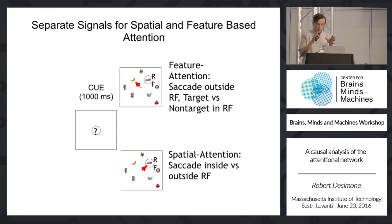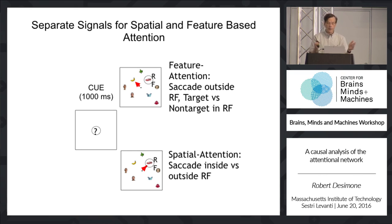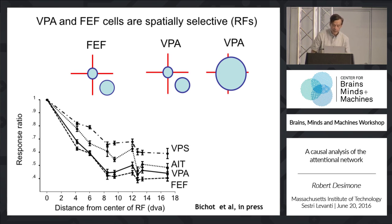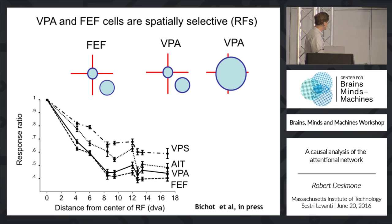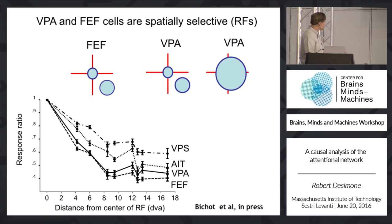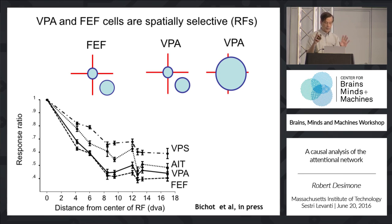We've recorded in the frontal eye fields of monkeys along with an area we believe could be the monkey equivalent of the IFJ — the ventral prearcuate region, or VPA, part of prefrontal cortex just in front of the frontal eye fields. While there's a mixture of receptive field sizes in VPA, many cells have receptive fields very similar to frontal eye field cells, carrying spatial information consistent with what Earl Miller and others have reported in prefrontal cortex.